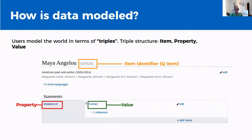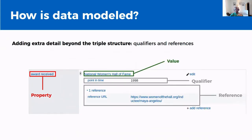A TRIPL can be read like a sentence in plain language as a statement containing a subject, predicate, and an object. So in this example, we have 'Maya Angelou is an instance of a human.' Aside from the basic TRIPL model, we can also add extra details to contextualize Wikidata statements. We can do this by adding qualifiers and references to statements. Qualifiers allow statements to be expanded on and annotated well beyond what can be expressed in the basic statement.